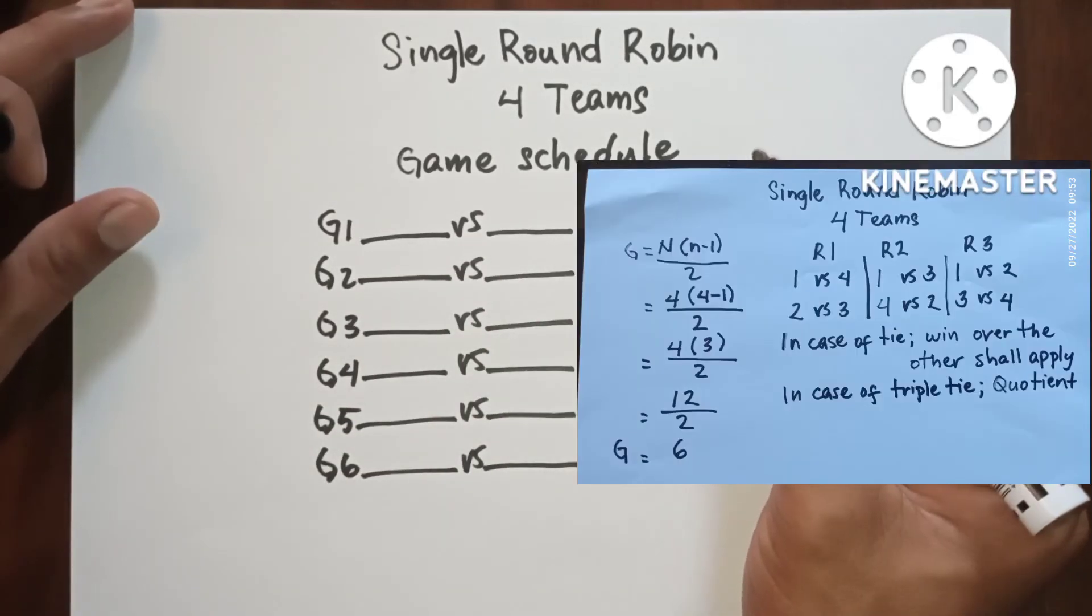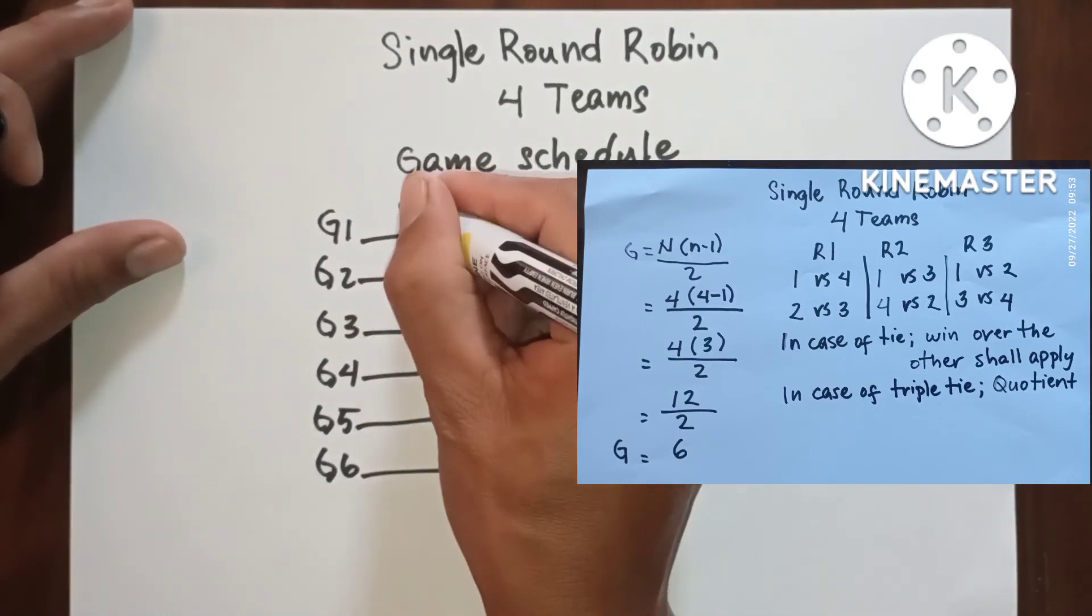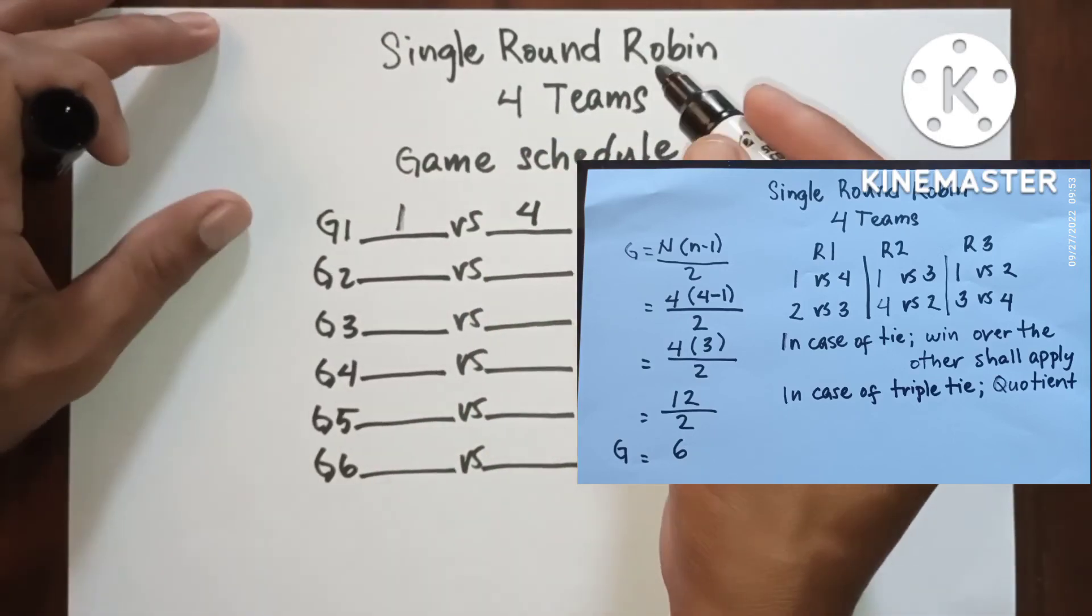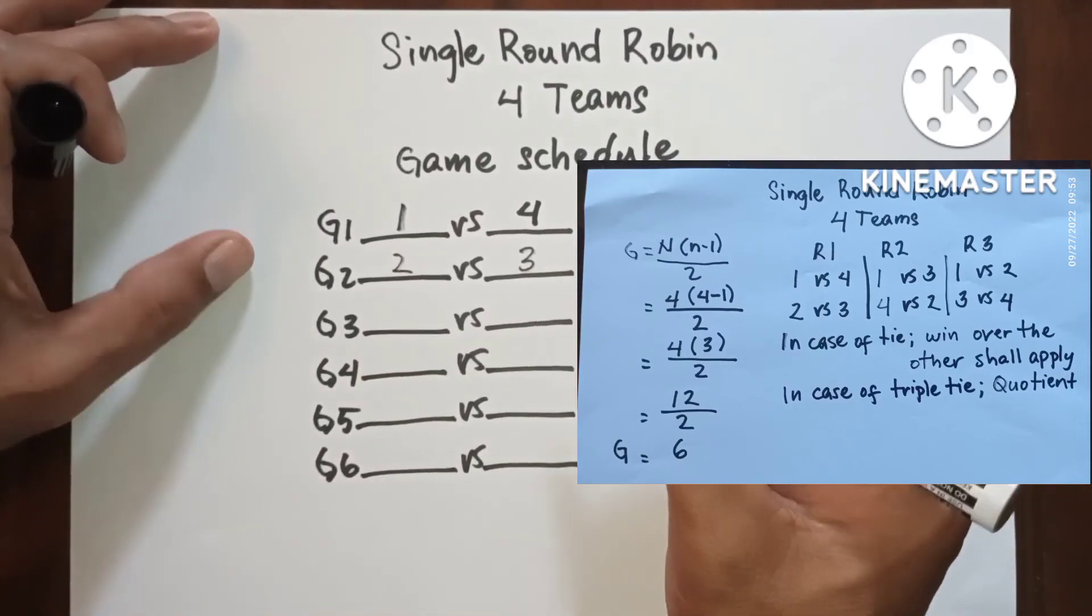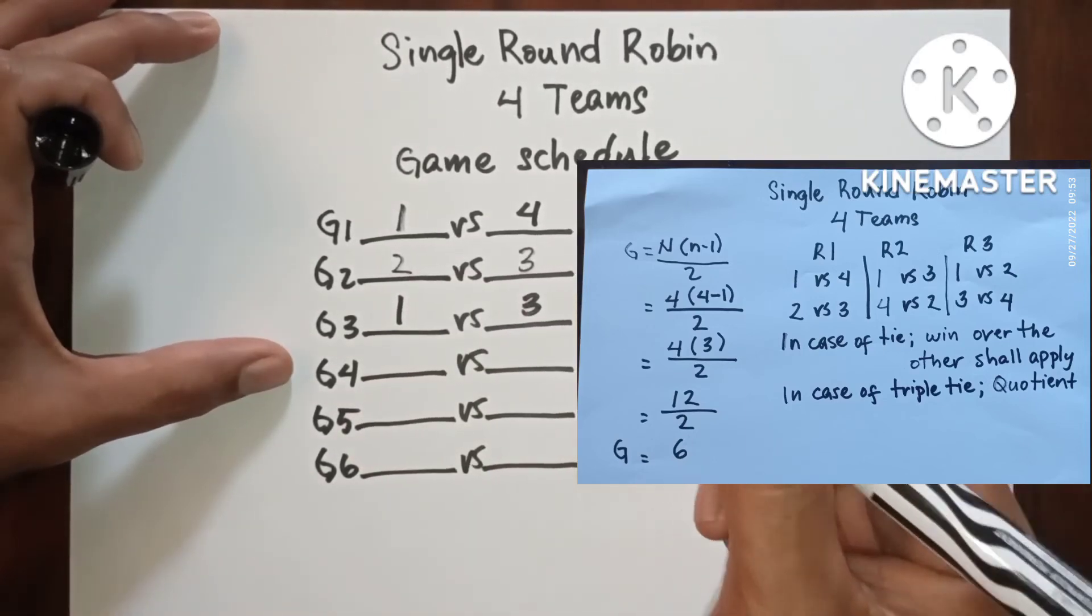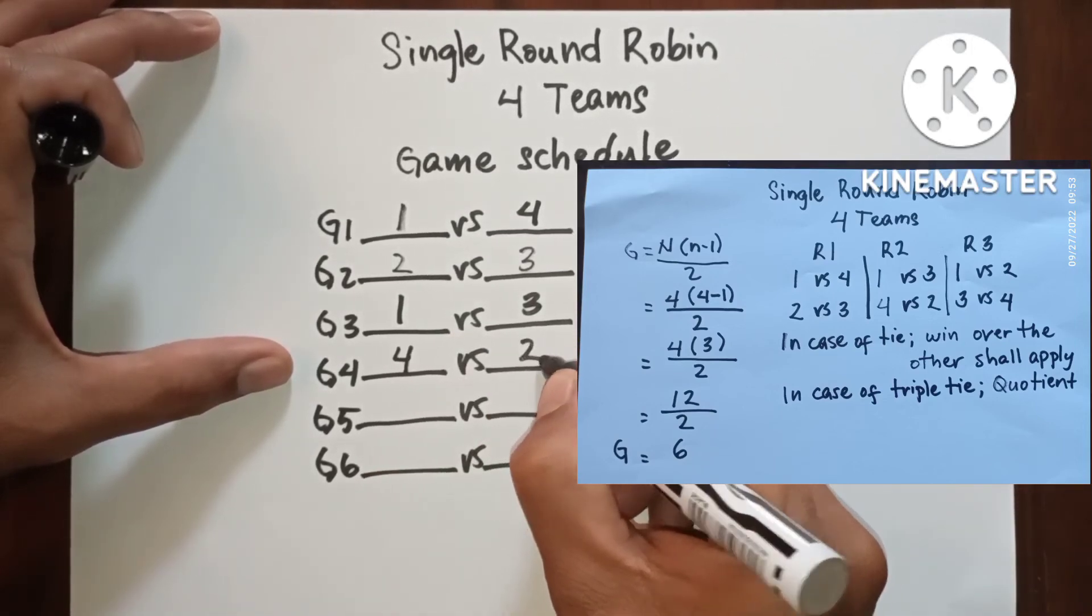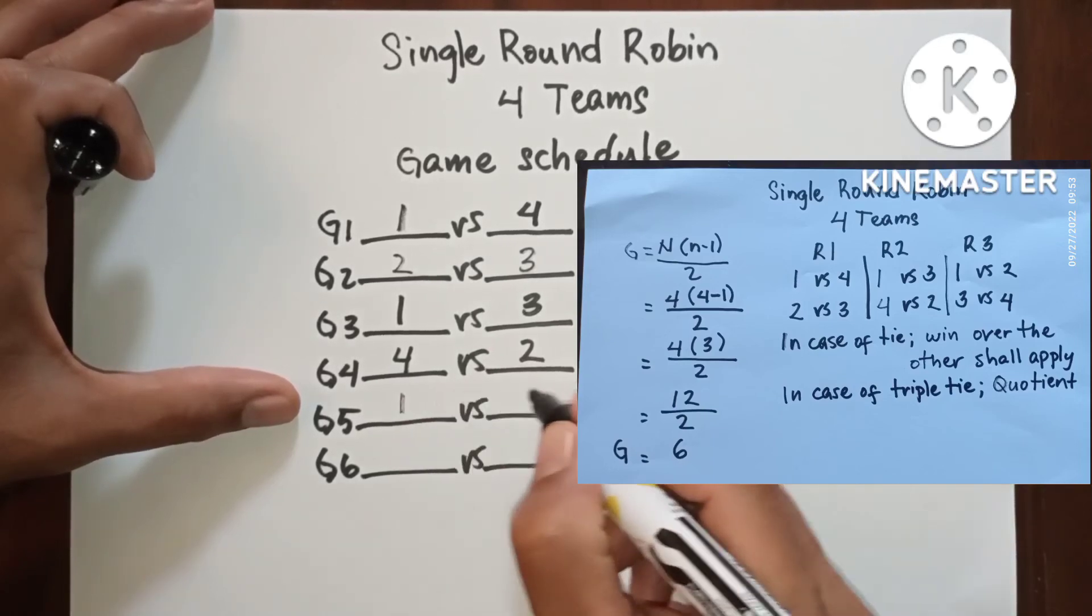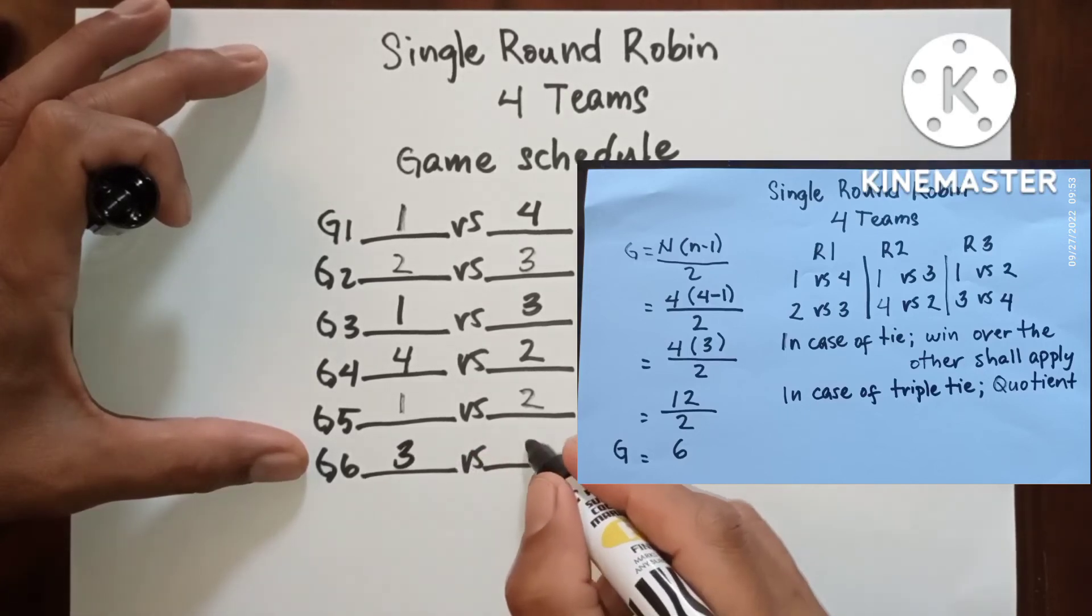In game one we have one versus four. In game two we have two versus three. In game three we have one versus three. In game four we have four versus two. In game five we have one versus two. In game six we have three versus four.